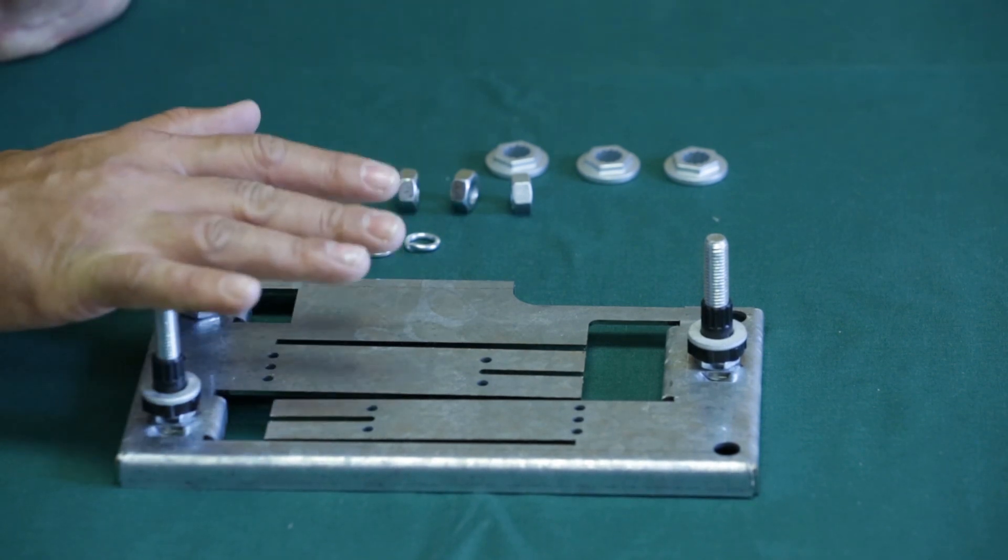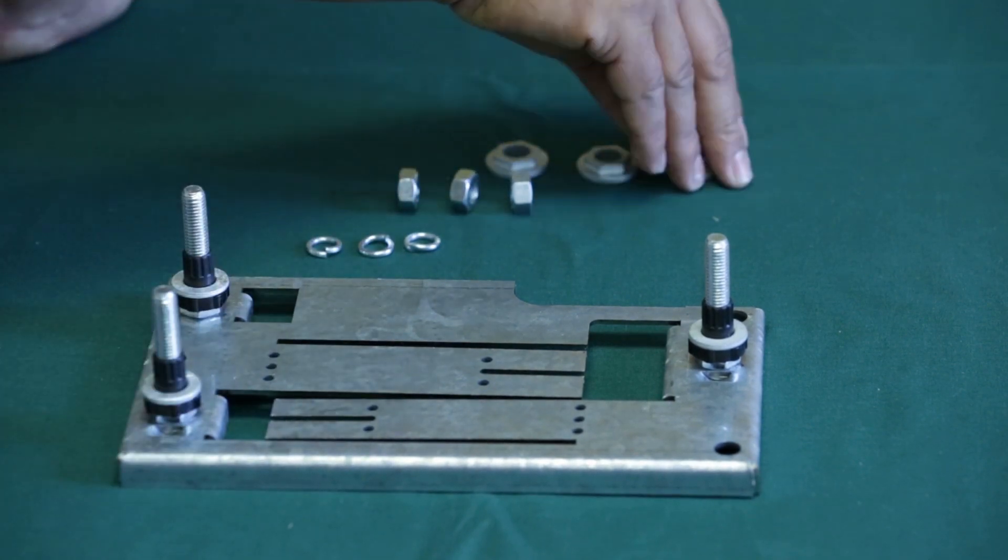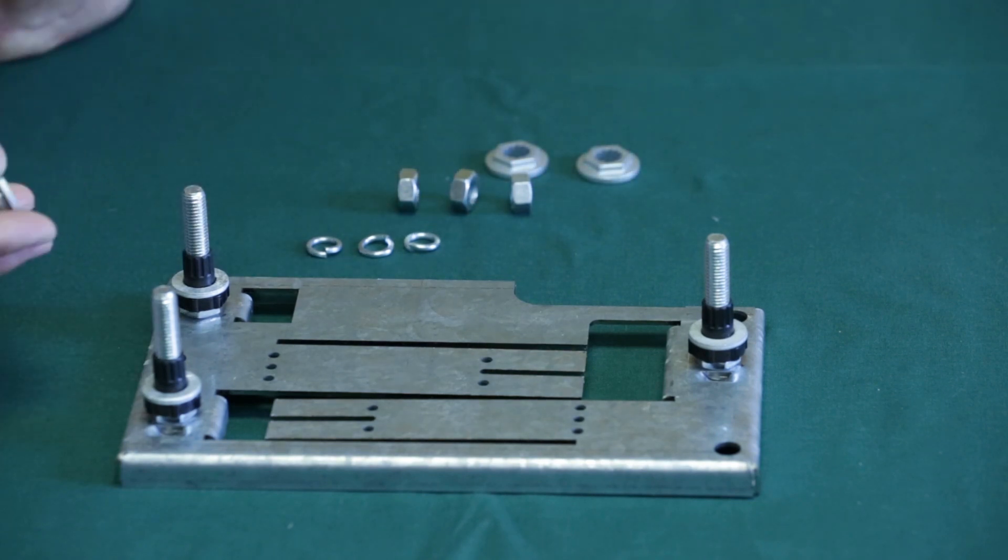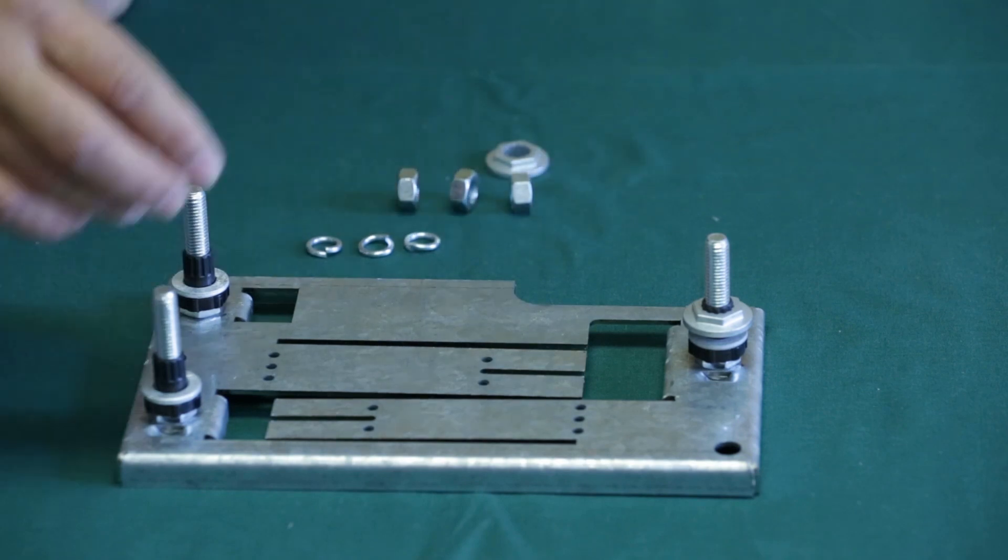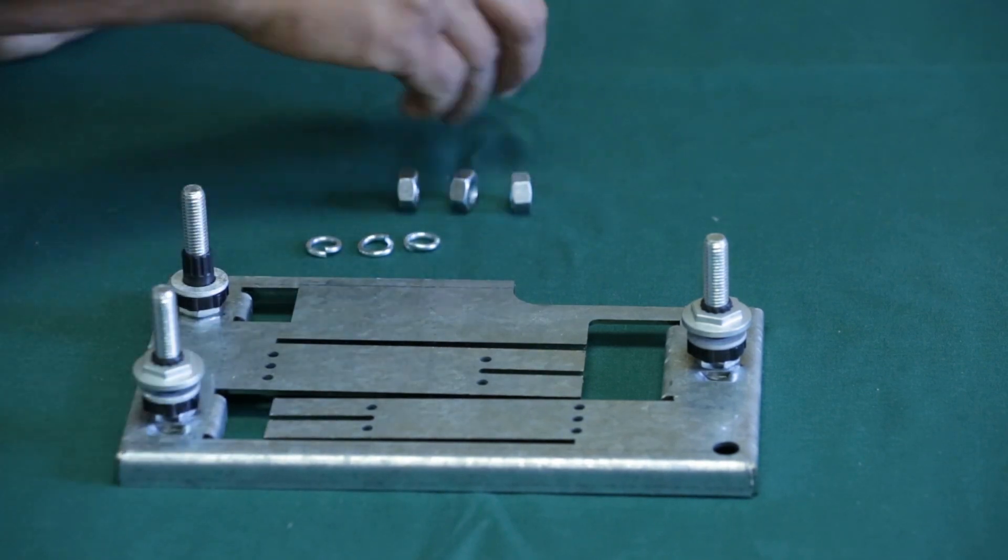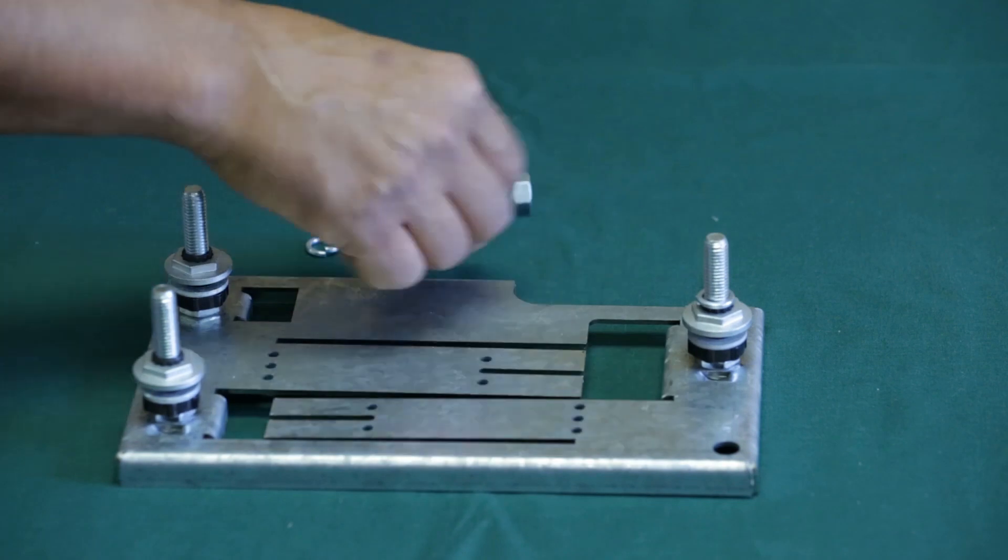I'm going to assemble now without the gearbox just so you can get a clear view. After the gearbox has been put in place, you fit your 19 millimeter height adjusters, then your spring washers, and then your 17mm full nut.